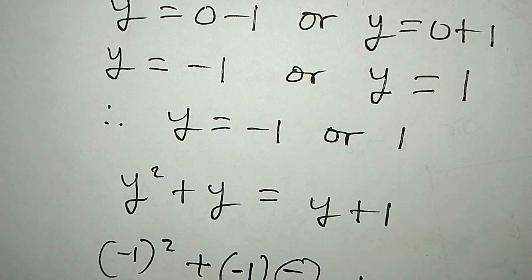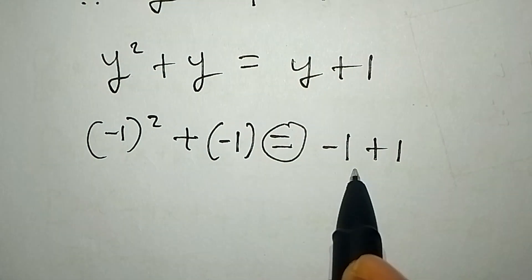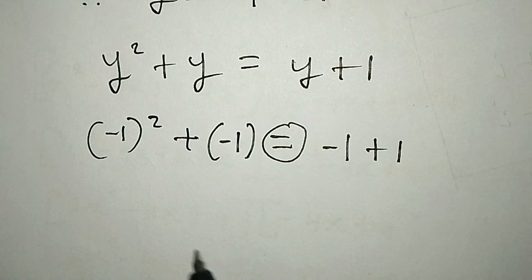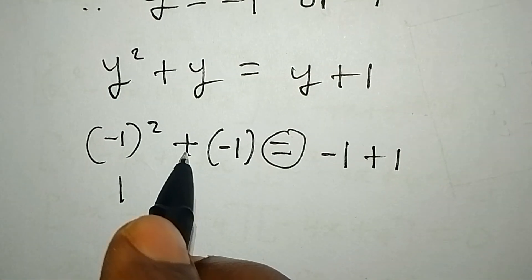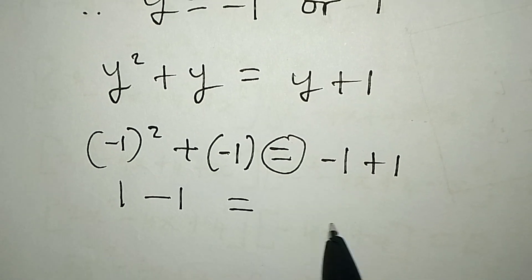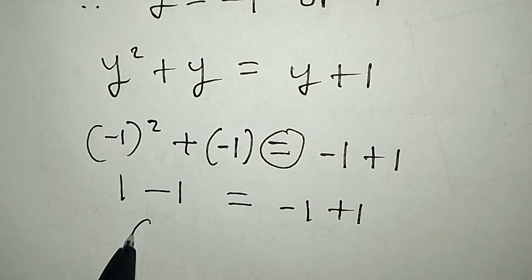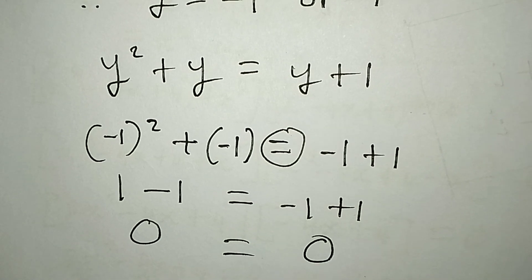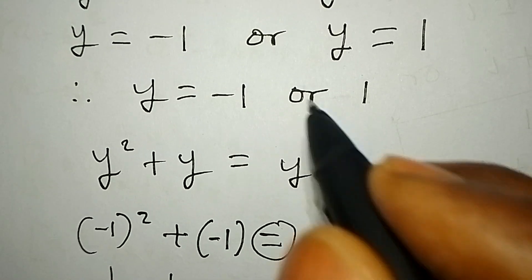Negative one squared is one, plus negative one equals zero. Would this equal negative one plus one? Yes, because this is zero and this is zero. This means the first value of y satisfies the equation.